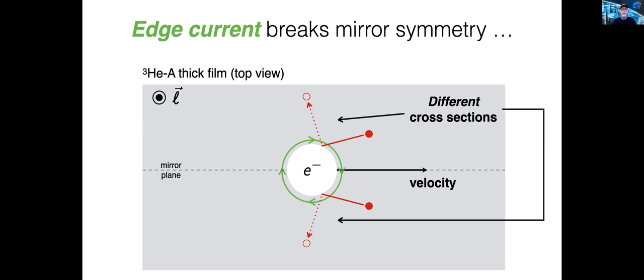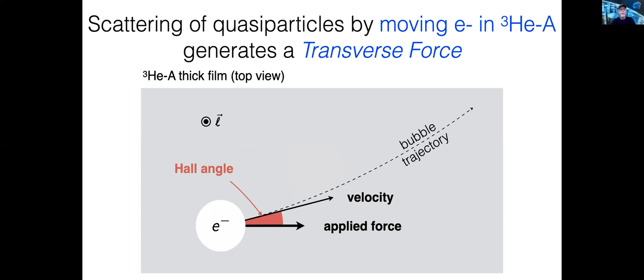As I said, it's left-handed in a right-handed vacuum, and the edge current breaks mirror symmetry. This breaking of mirror symmetry leads to an asymmetry in the scattering amplitude for positive deflections compared to negative deflections of a quasiparticle or a quasihole. And this asymmetry in the scattering cross-section is the origin of the skew scattering and the transverse force. The combined drag and Hall force then determines the average deflection of the electron bubble, and that's parametrized by the Hall angle.